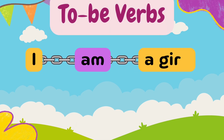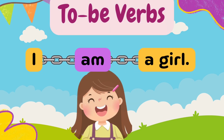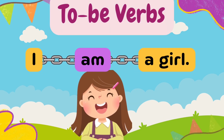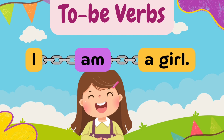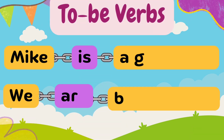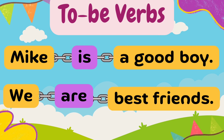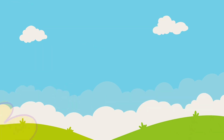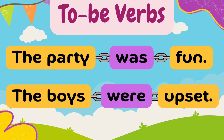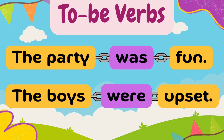Now, let's look at some more examples. I am a girl. Mike is a good boy. We are best friends. The party was fun. The boys were upset.